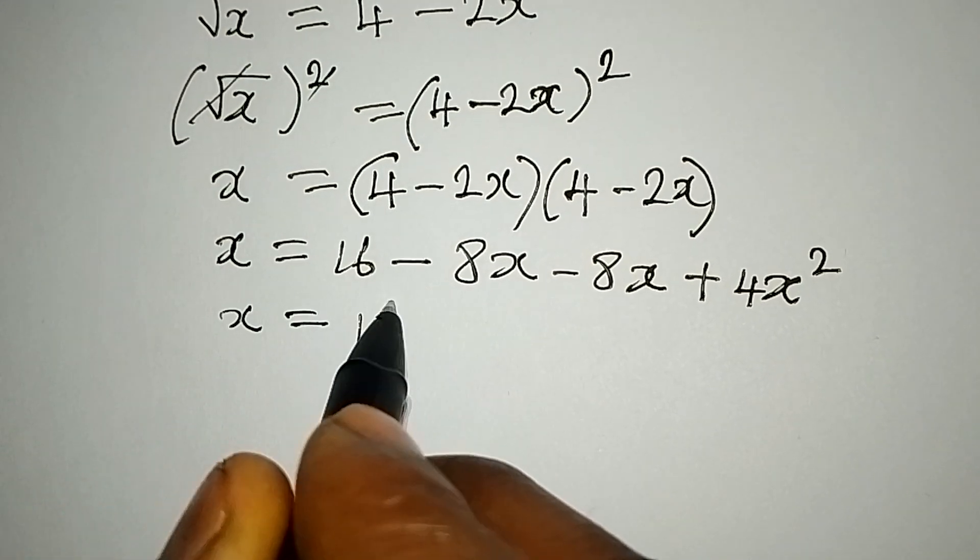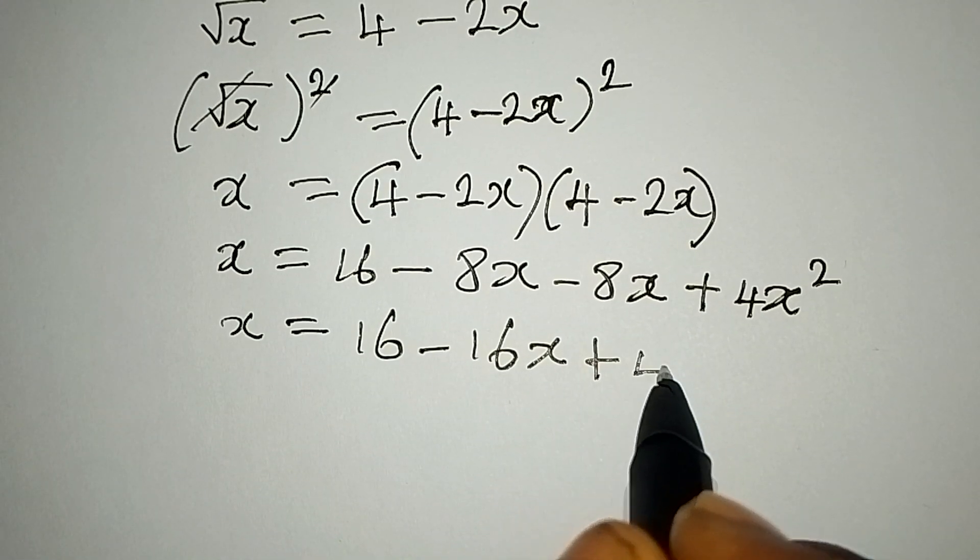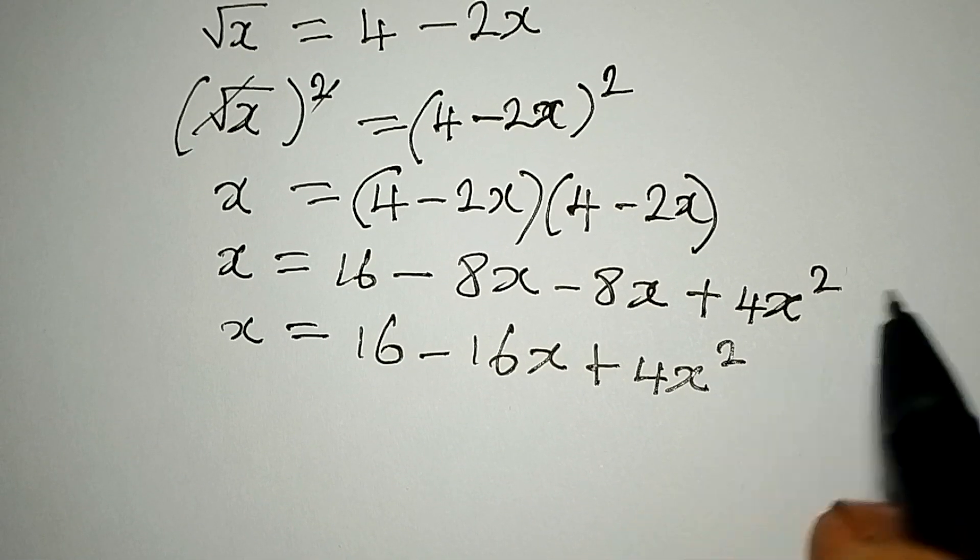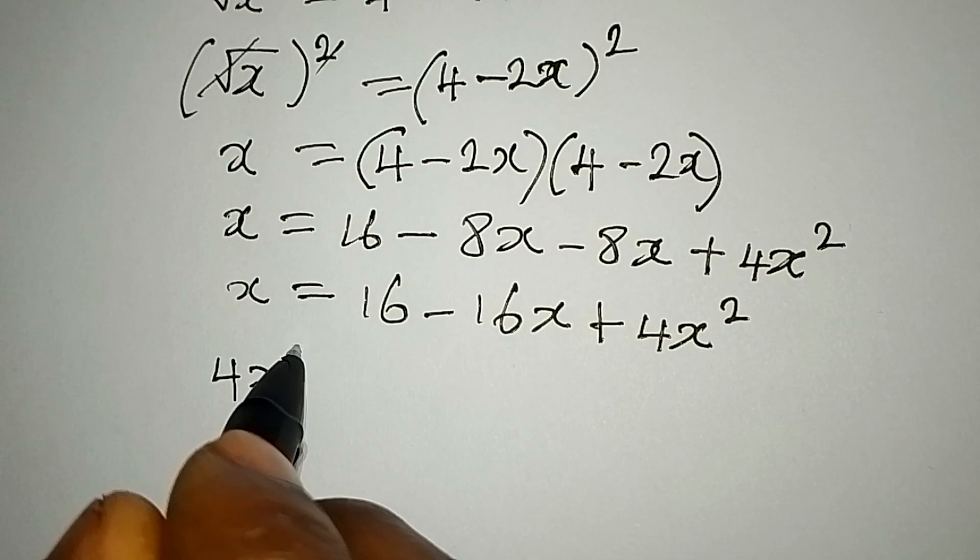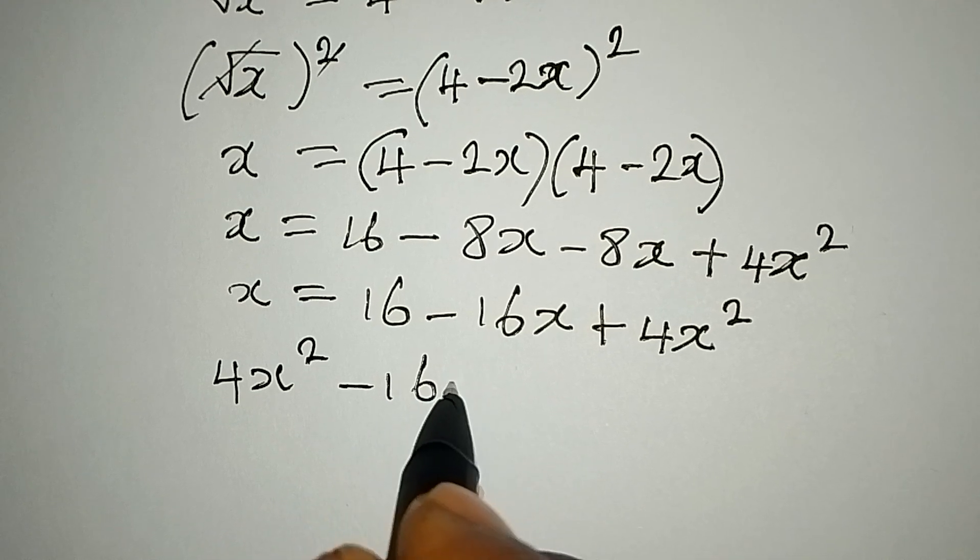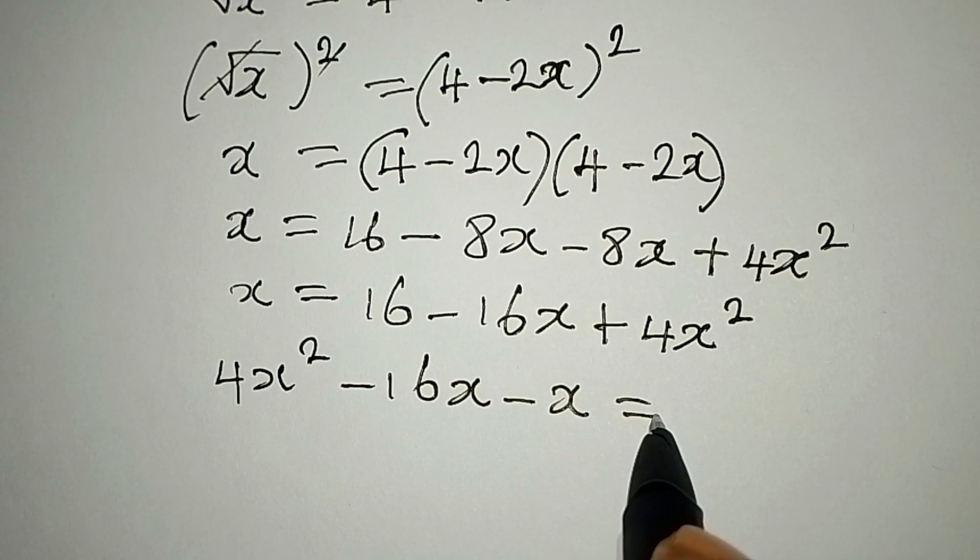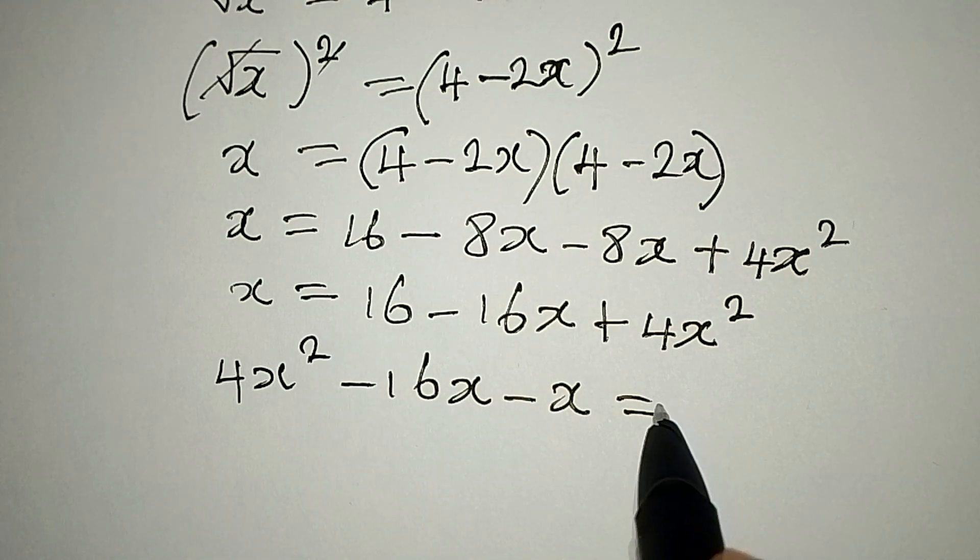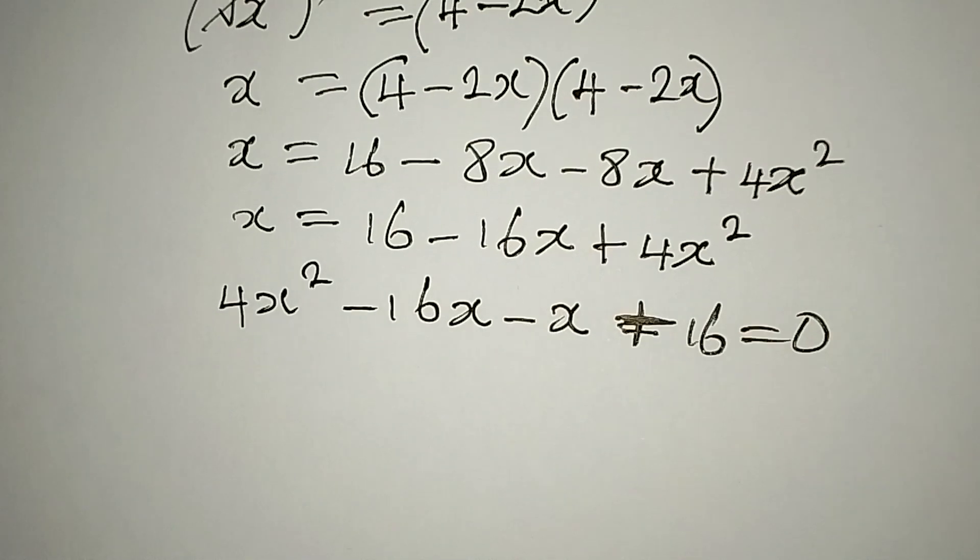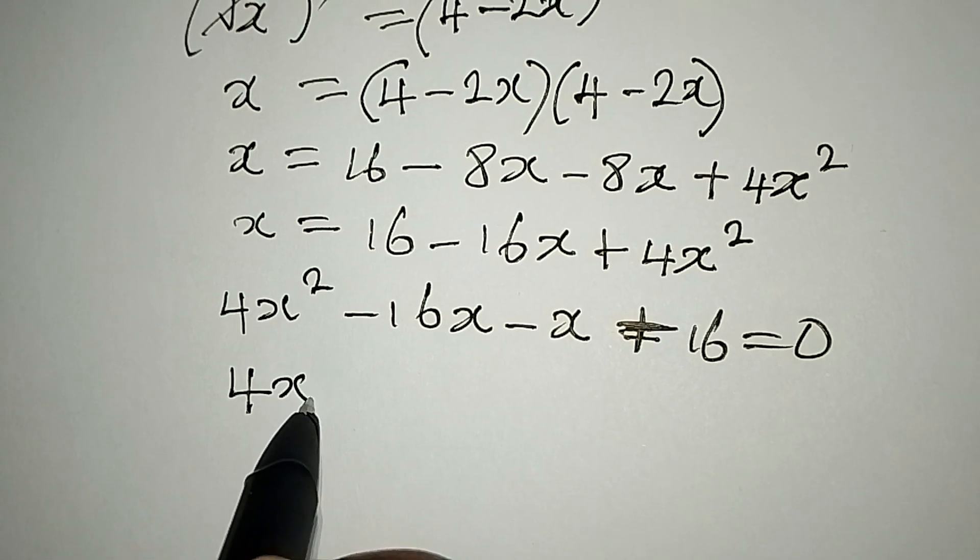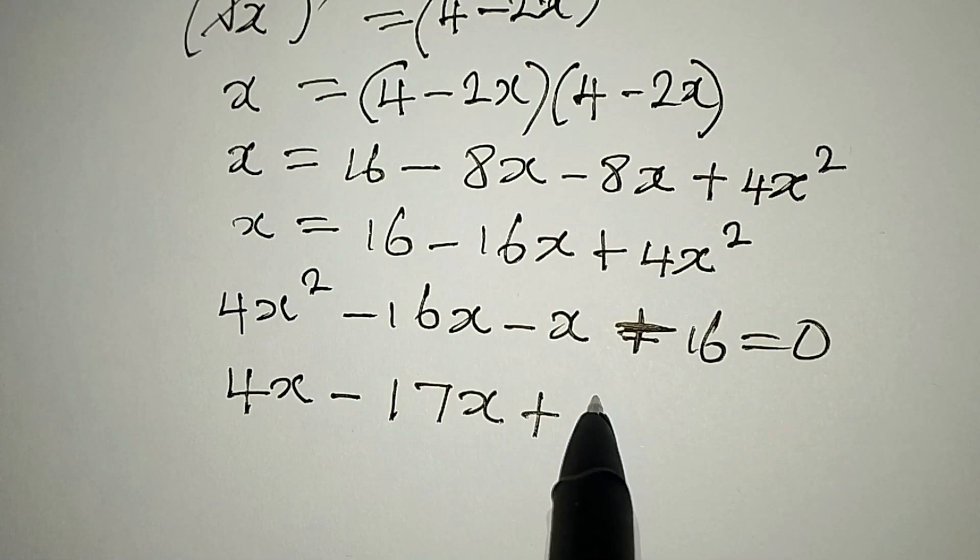So x here is equal to 16 minus 16x plus 4x squared. Now what do I do? I want to write 4x first, so we'll write 4x squared minus 16x minus x, and we still have this 16, so that is plus 16 equals zero.